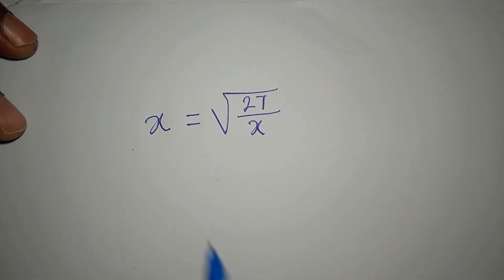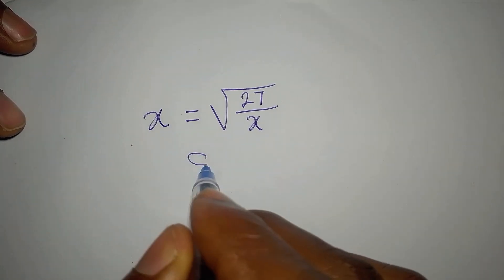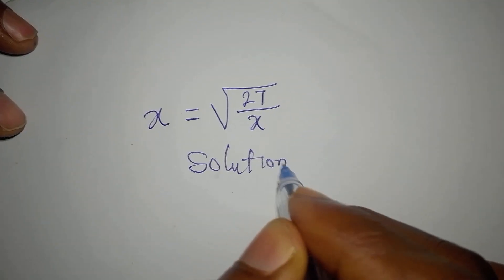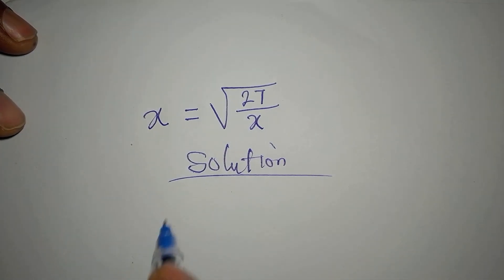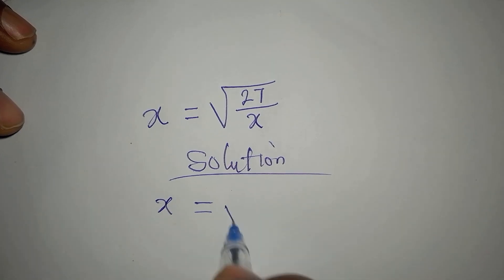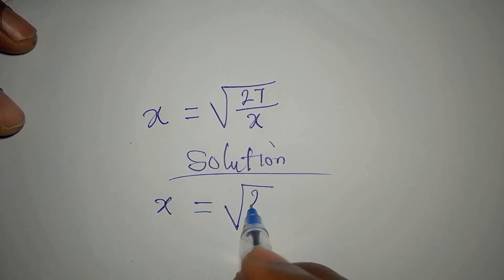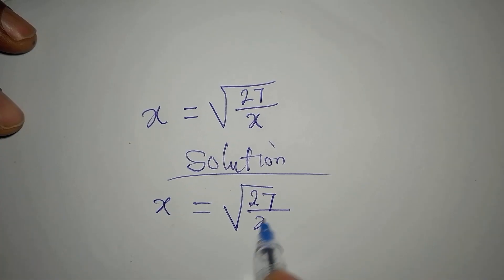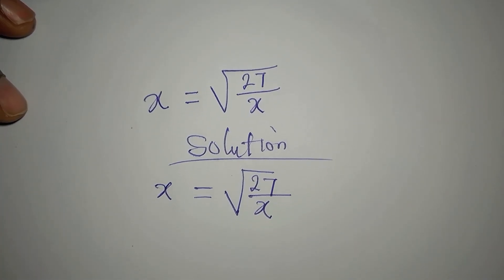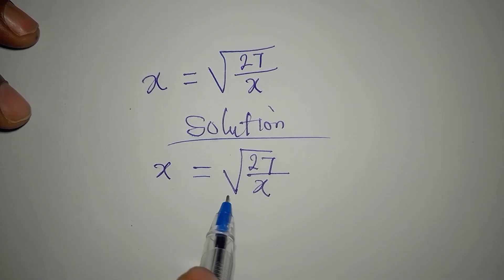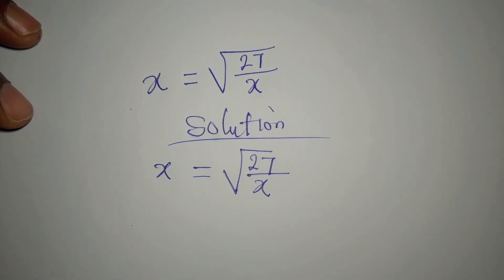Hi everyone, let's solve this right away. We have x equal to the square root of 27 over x, and the question says we should find three solutions from here.